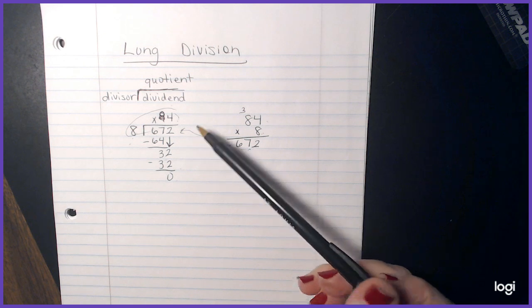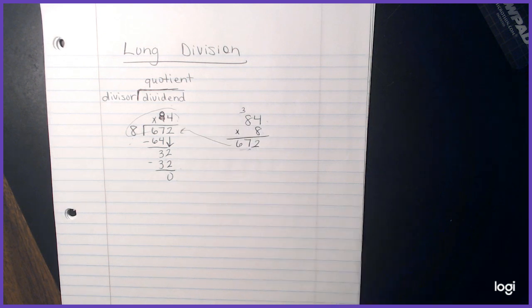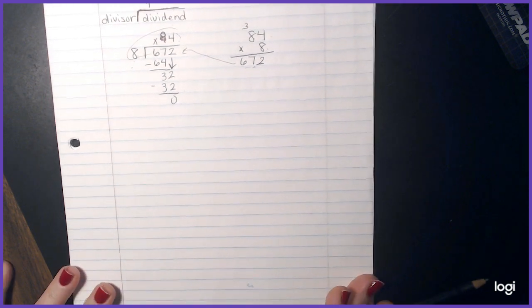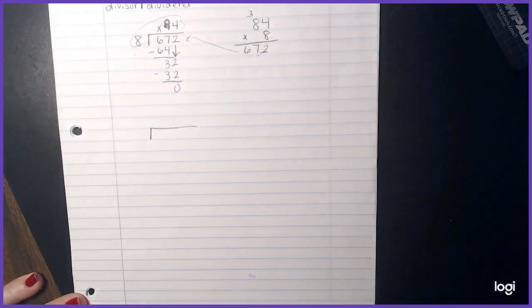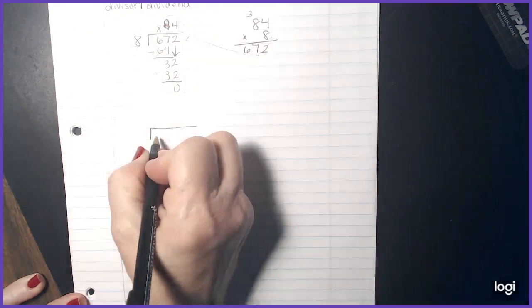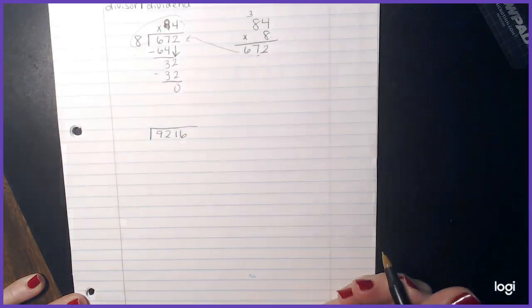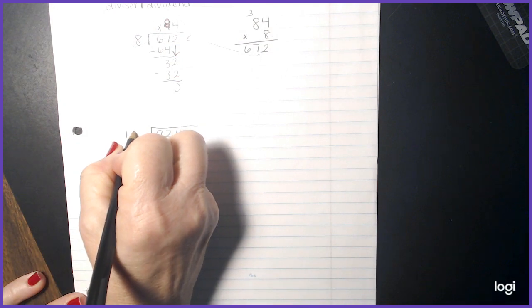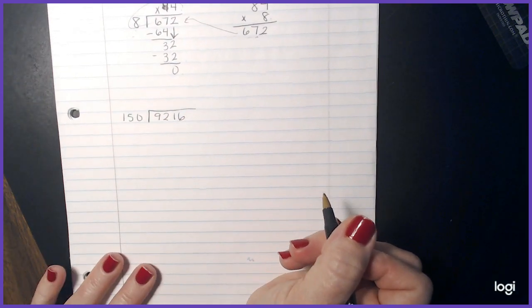Now, sometimes division problems aren't going to come out as evenly like this, where I get a zero. So we're going to write another problem in our math notes for today. We're going to make our division box. Our dividend is going to be 9,216. Our divisor is going to be 150 this time.